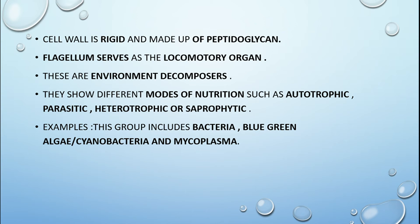Monera show different types of modes of nutrition: autotrophic, parasitic, heterotrophic, and saprophytic. Examples of Kingdom Monera include bacteria, blue-green algae (BGA), also known as cyanobacteria, and mycoplasma.